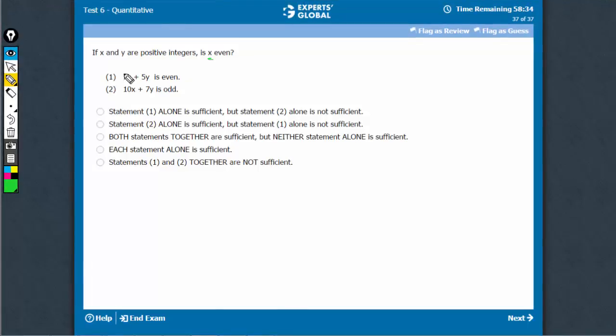We need to know whether x is even. These two add up to even, so that means either both are even, even plus even, or both are odd.